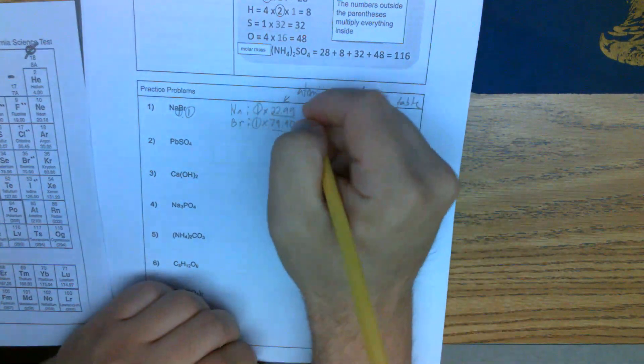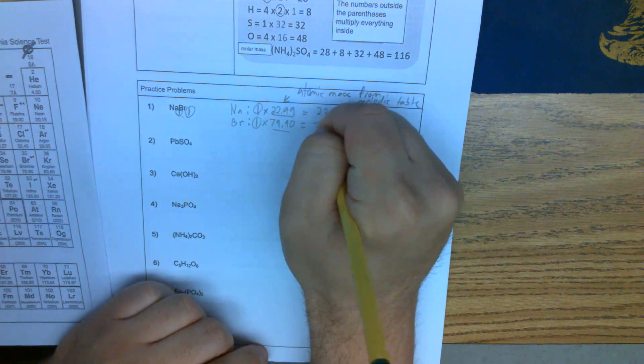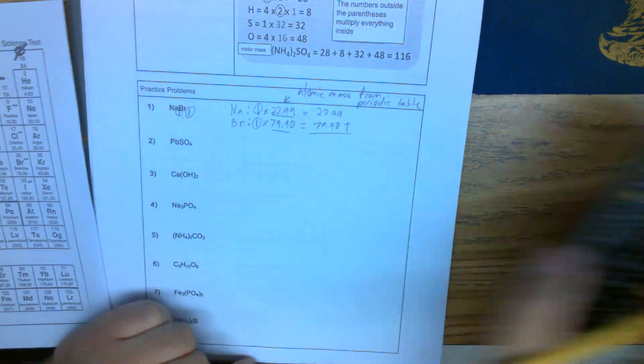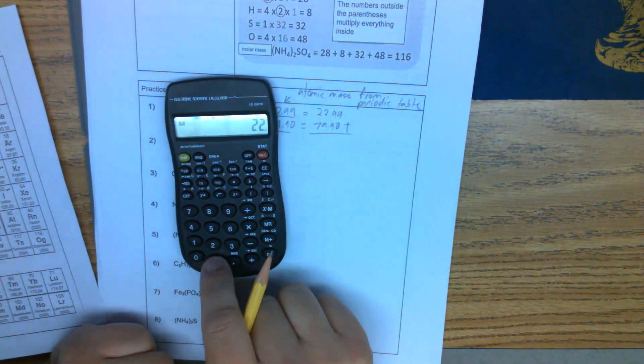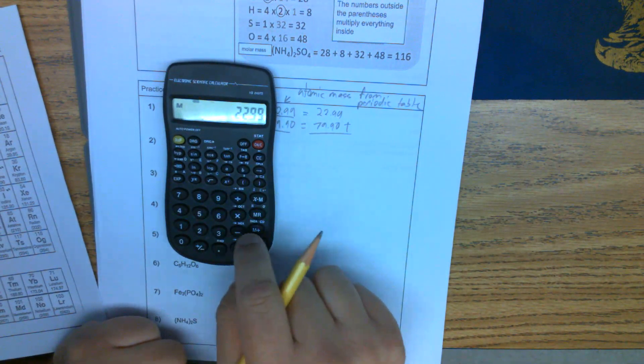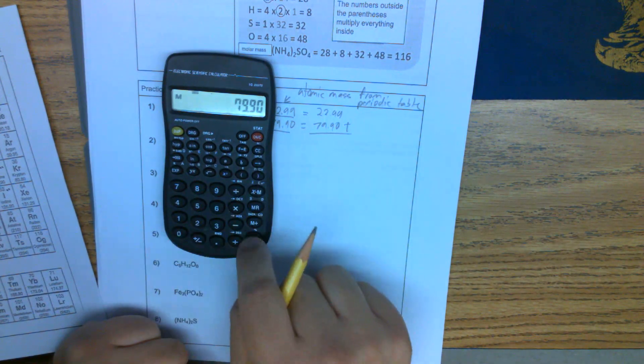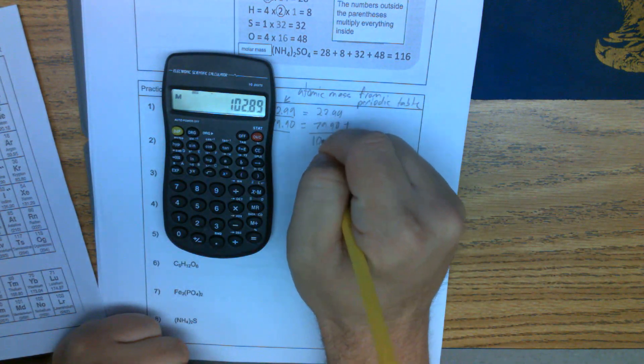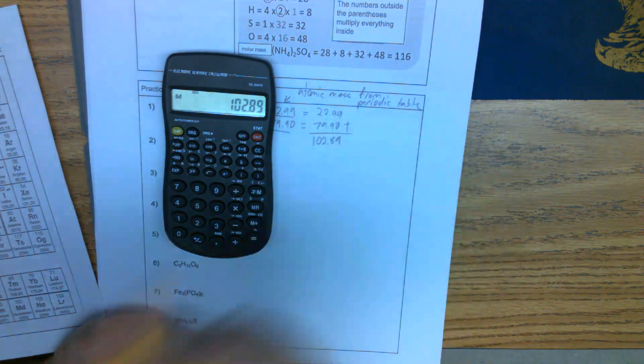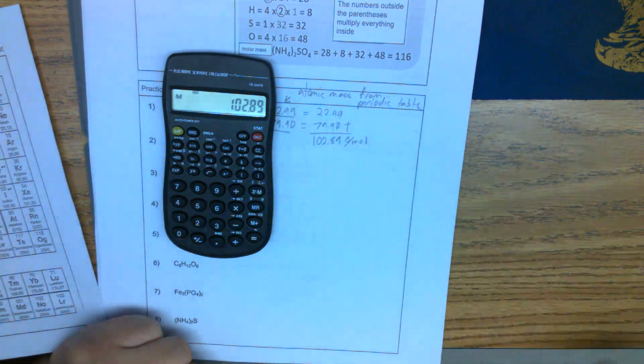Okay, so this is not going to change these numbers. We're just going to add these two together: 22.99 plus 79.90. We're going to get 102.89, and then units, grams per mole. All right, so that's the first one.